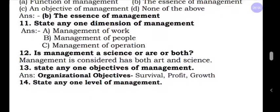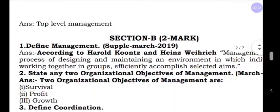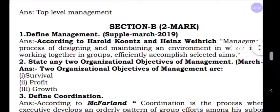Question number thirteen: State any one organizational objective. There are three organizational objectives: survival, profit, growth — you can write any one. Question number fourteen: State any one level of management. We have three levels. You can write any one — top level, middle level, supervisory, operational level, or lower level.